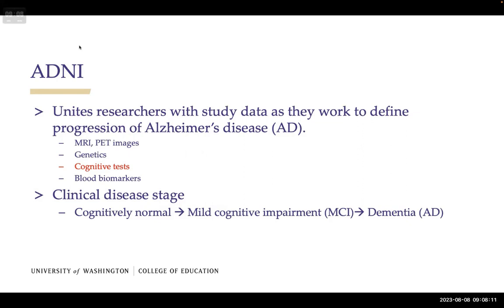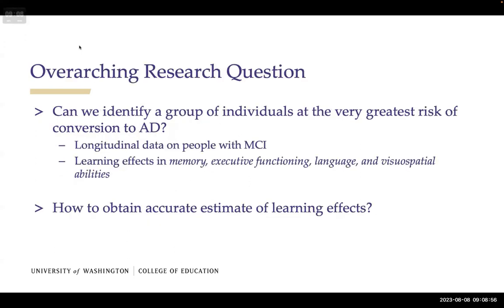ADNI is a massive collaborative effort to unite researchers with study data as they work to define the progression of Alzheimer's disease. It's a rich and massive dataset containing MRI, PET images, genetics, cognitive tests, blood biomarkers, and more. For this particular study we focused only on cognitive tests. We are interested in figuring out risk factors — what makes certain people more likely to convert from mild cognitive impairment to Alzheimer's disease.